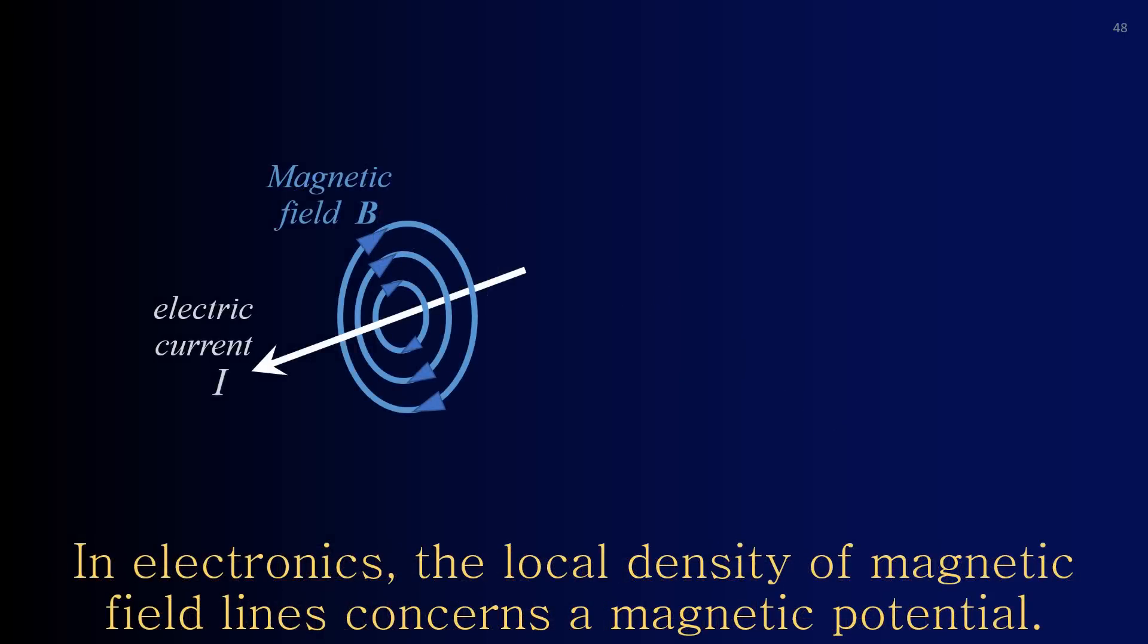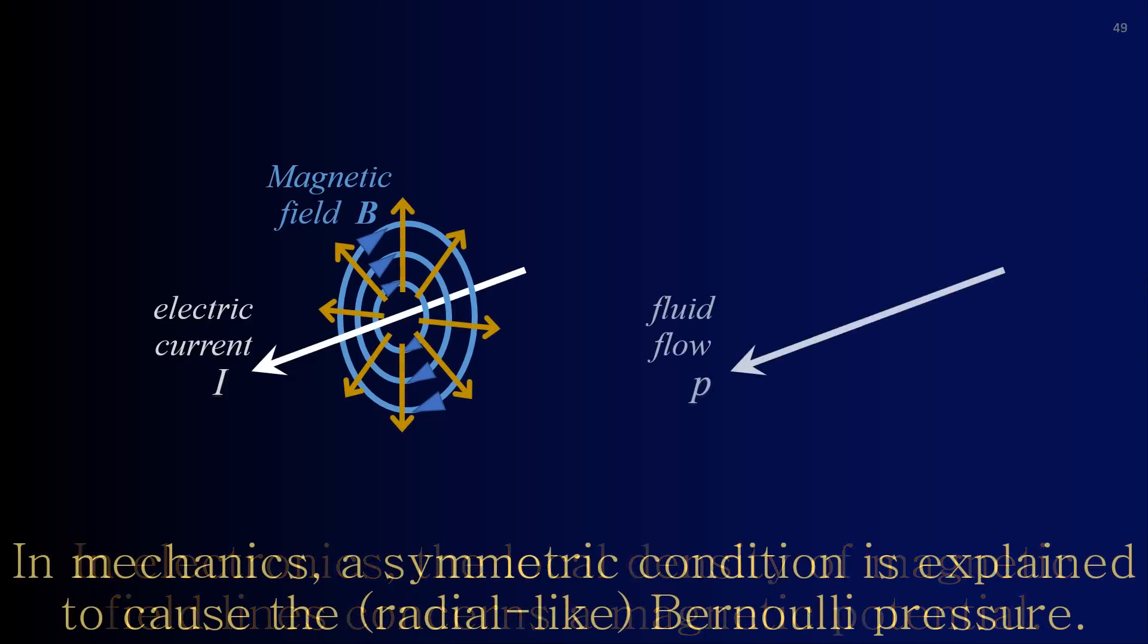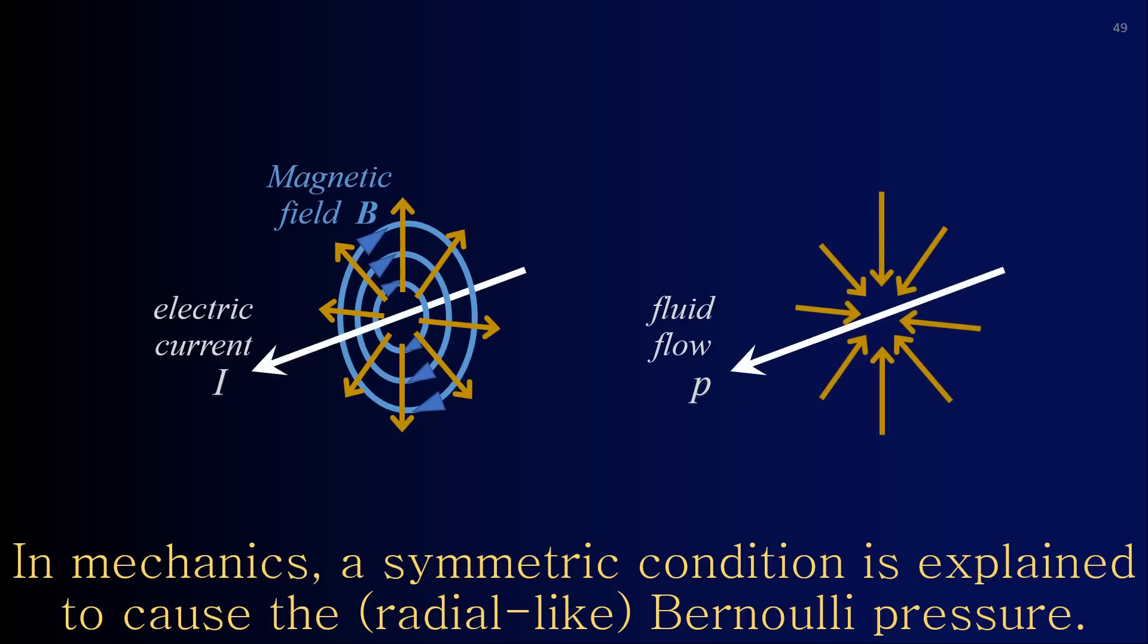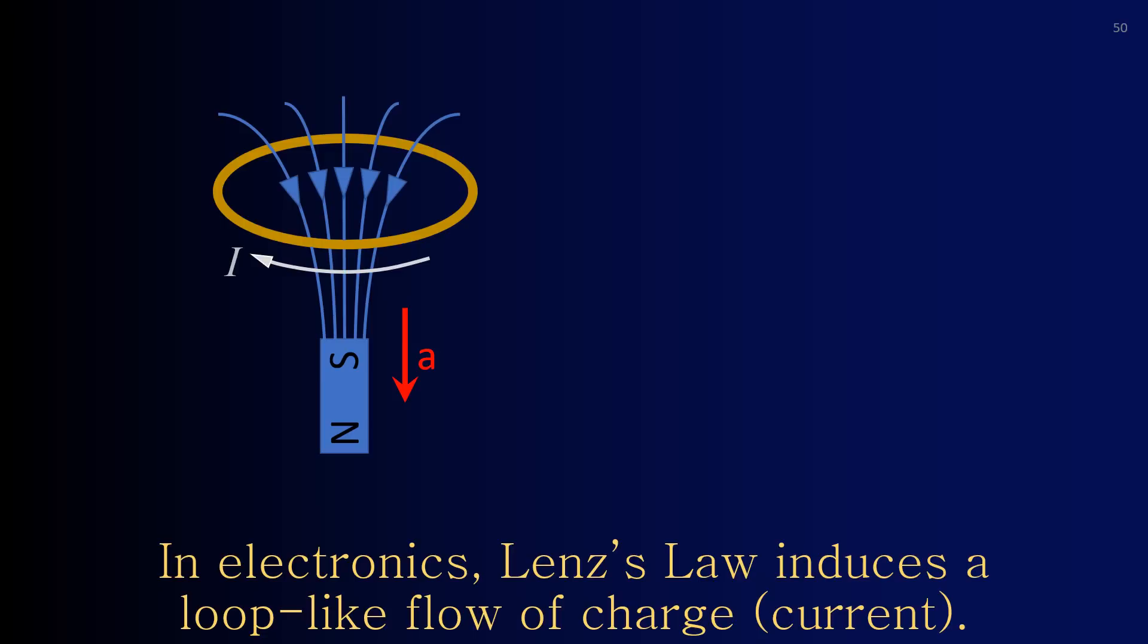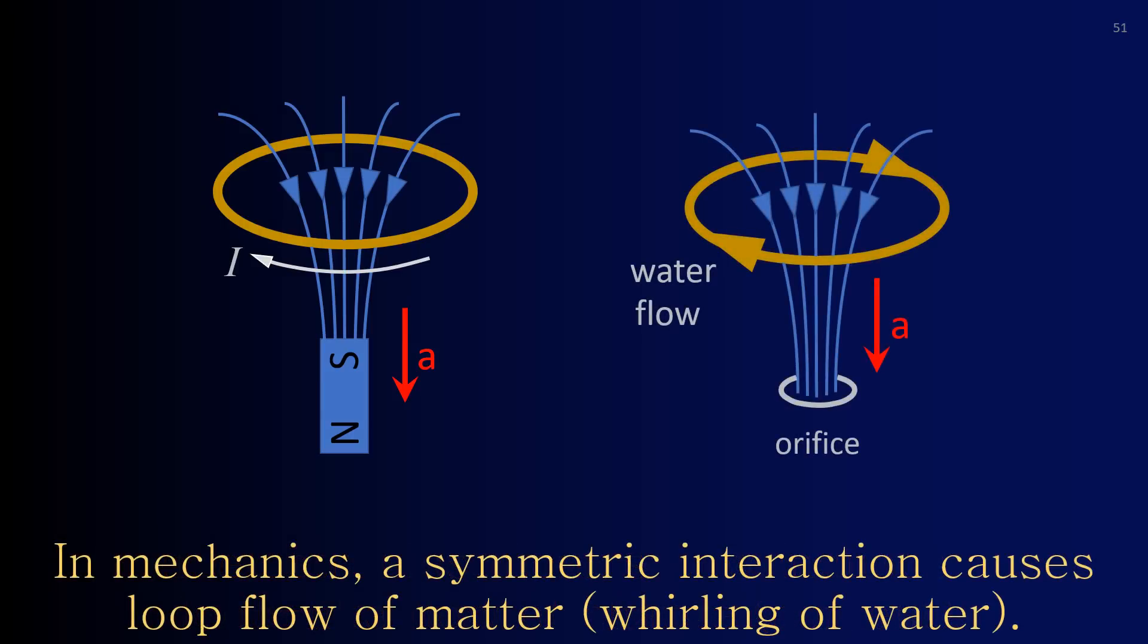In electronics, the local density of magnetic field lines concerns a magnetic potential. In mechanics, a symmetric condition is explained to cause the Bernoulli pressure. In electronics, Lenz Law induces a loop-like flow of charge. In mechanics, a symmetric interaction causes loop flow of matter, like in the whirling of water.